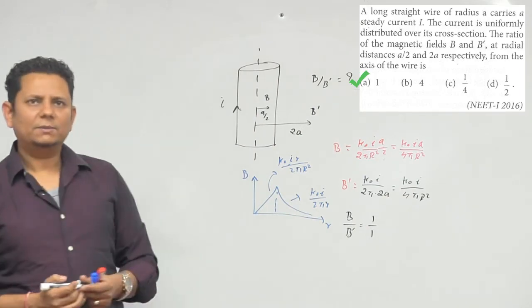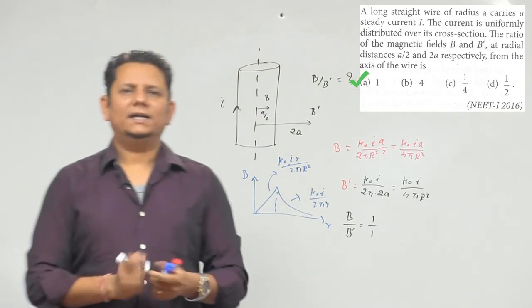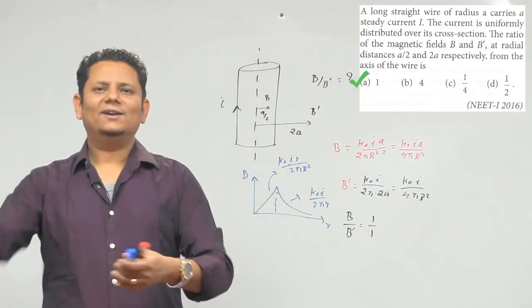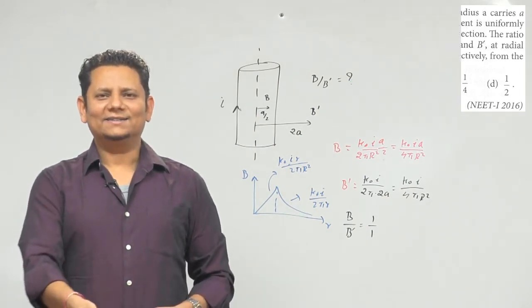तो ratio आ गया। इसका मतलब यह है कि इस सवाल का जवाब option number A would be the right answer.